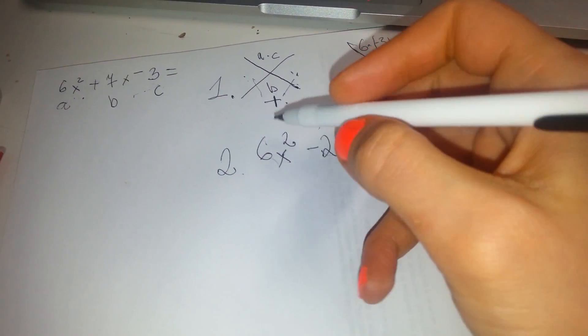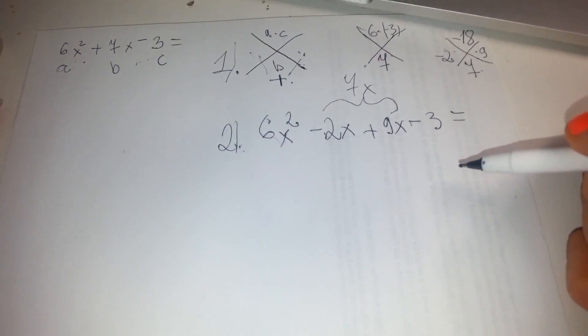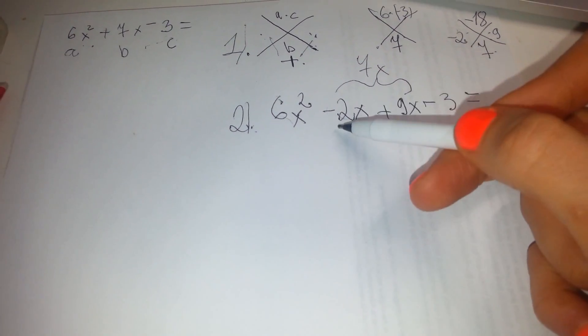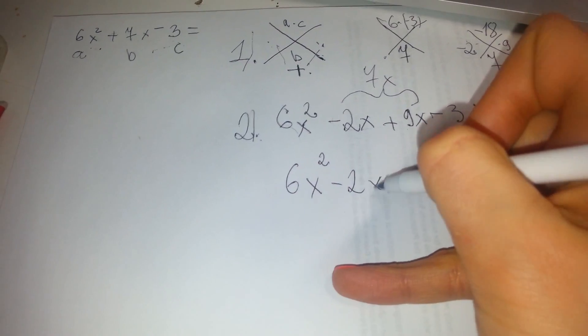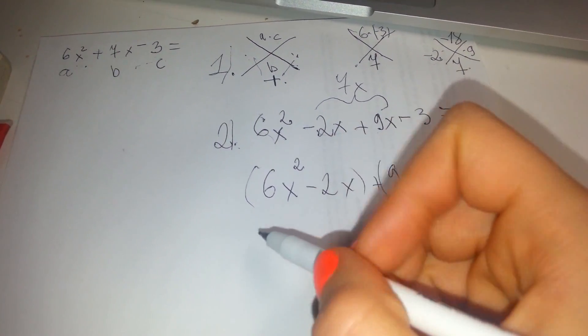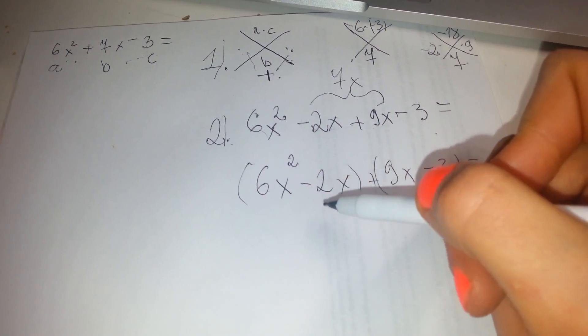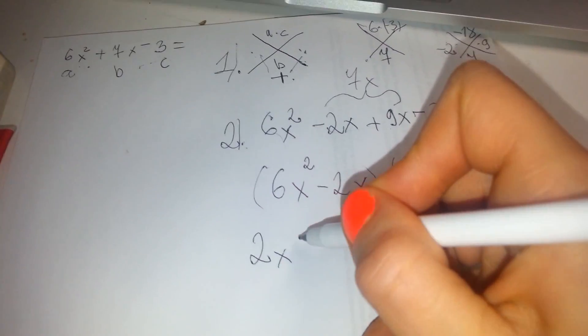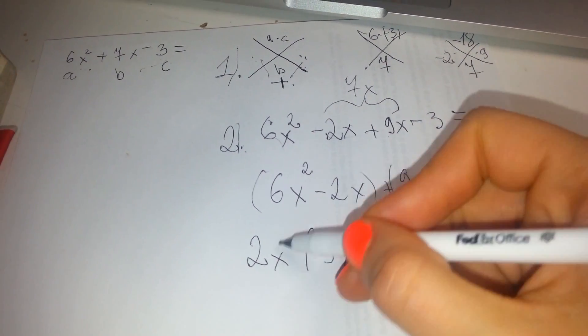So now what we gotta do, this is the steps. Now we gotta combine the like terms. Usually you choose the smaller number here, the bigger number here, and then you factor it out. So we can do this for now. Just extra steps for easier seeing. Now I can see that I can pull out 3 out of this, and I can pull out 2x out of this. So, gonna have 2x(3x - 1). Now, plus, now we pull this 3 out, we got 3(3x - 1).